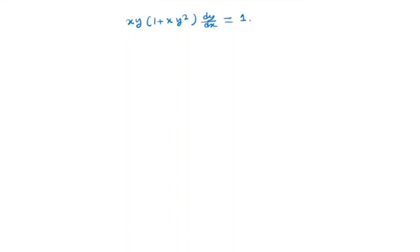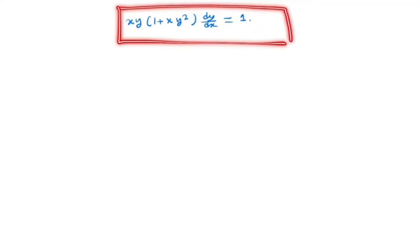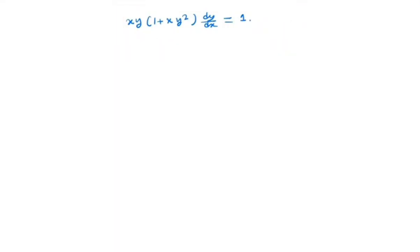Hi everyone, welcome back to my channel. Now we will solve the following ODE: xy times (1 plus xy squared) times dy/dx is equal to 1. First let us simplify this equation, so we will get dy/dx is nothing but 1 divided by xy times (1 plus xy squared).